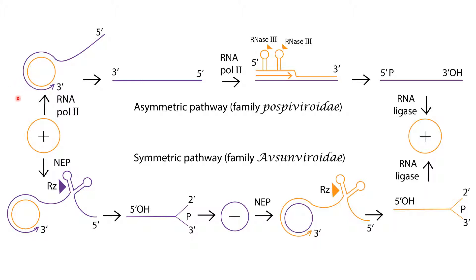Viroids replicate autonomously by using host-encoded RNA polymerase. There are two types: asymmetric rolling circle replication and symmetric rolling circle replication. Members of Pospiviroidae replicate via asymmetric rolling circle replication. The incoming positive circular RNA is initially transcribed into a concatemeric linear negative strand RNA, which then serves as a replication intermediate for synthesis of concatemeric linear positive strand RNA.